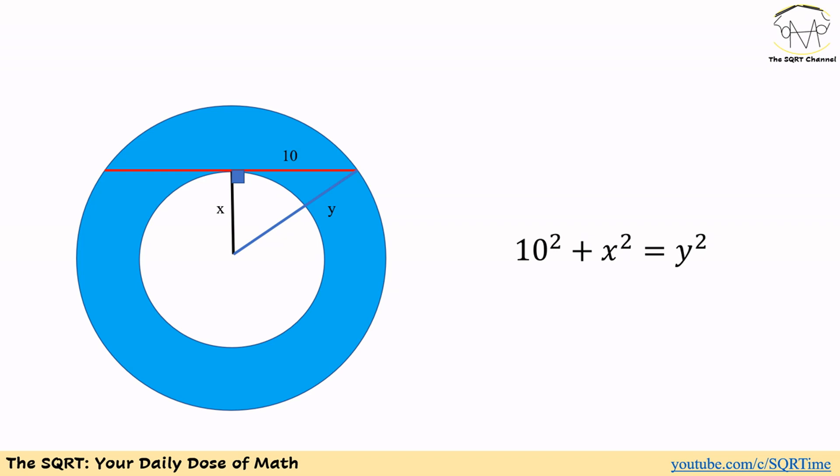Now what can we say about the area that we have here in blue? The area can be calculated as the area of the large circle minus the area of the small circle. The area of the large circle is going to be π times Y², and the area of the small circle can be calculated as π times X².